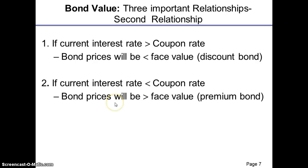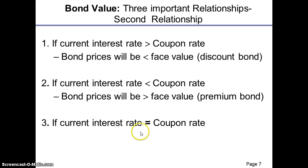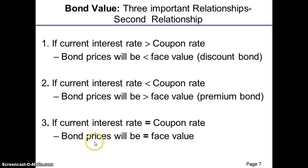Conversely, if the interest rate is less than the coupon rate, the bond price will be greater than $1,000 and such a bond will sell at a premium — at a higher price than the face value. If the current interest rate equals the coupon rate — say both are 10% — then the bond price will also equal the face value of $1,000. These three are very important facts relating to a bond.